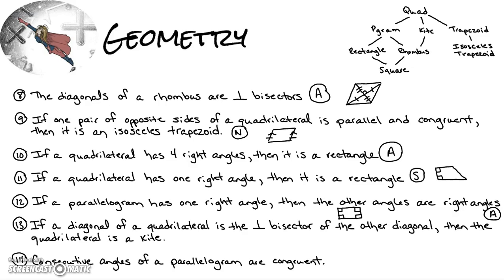Number thirteen: if a diagonal of a quadrilateral is the perpendicular bisector of the other diagonal, then the quadrilateral is a kite. That is always true because it is a property of kites — one diagonal is the perpendicular bisector of the other, forming a right angle, with the shorter diagonal being bisected.